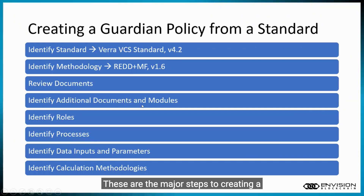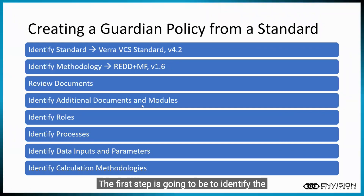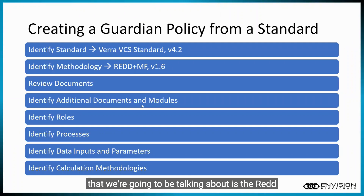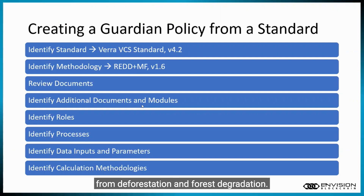These are the major steps to creating a policy in the Guardian from a standard. The first step is going to be to identify the standard. In this case, we're going to be using the VERA-VCS standard, which is the main standard for verifying carbon reductions and offsets. And the methodology we're going to be talking about is the REDD methodology, which stands for Reducing Emissions from Deforestation and Forest Degradation.